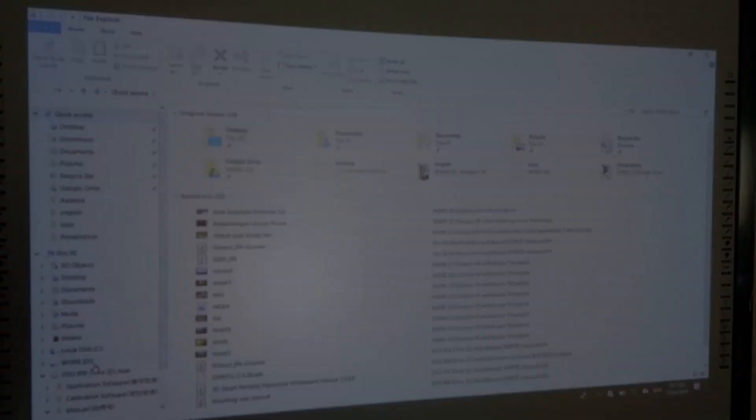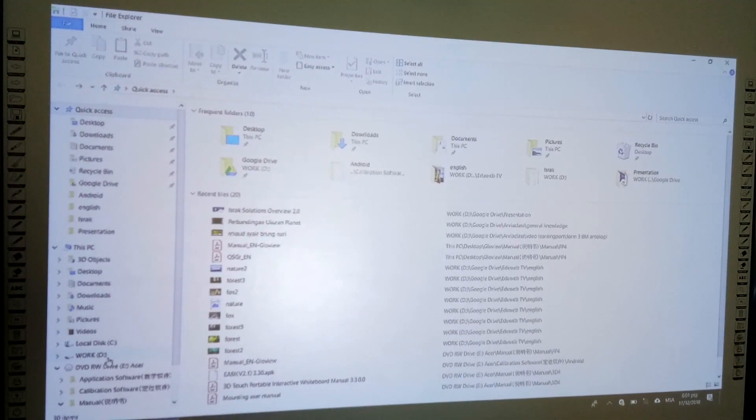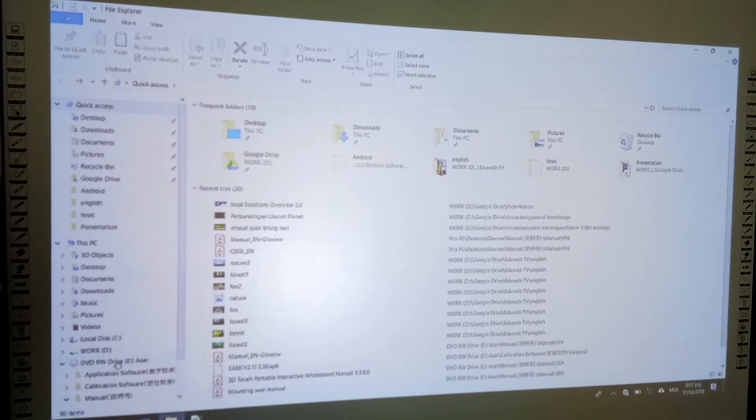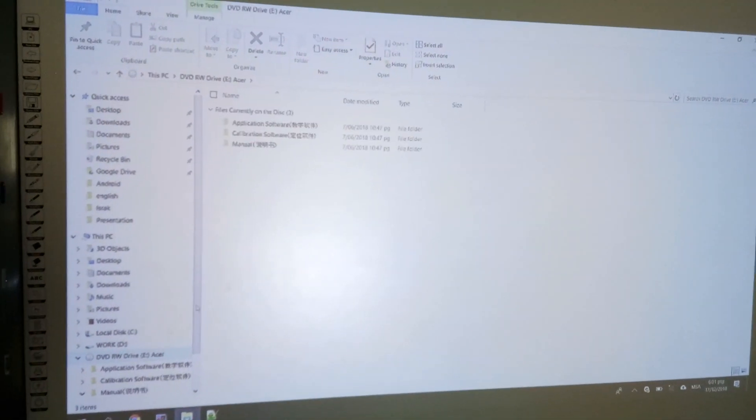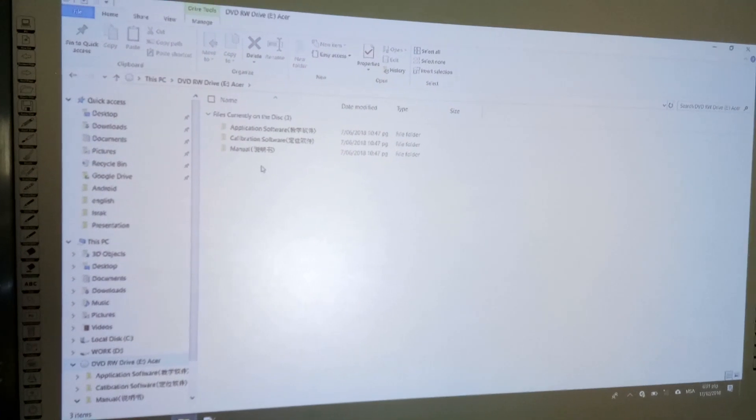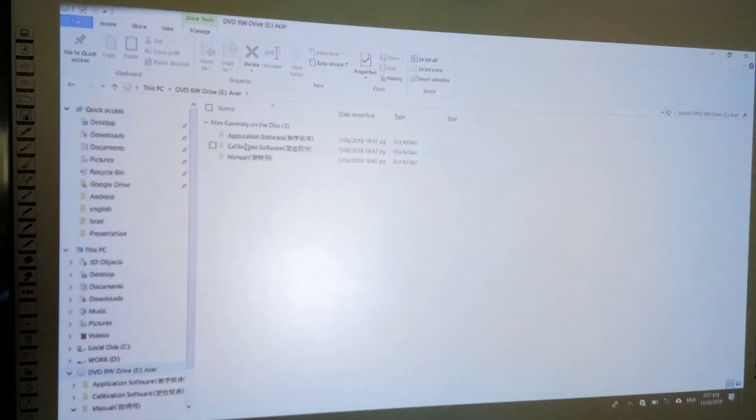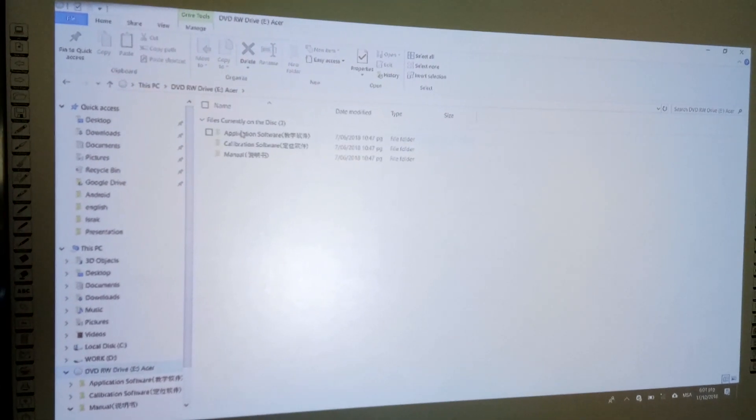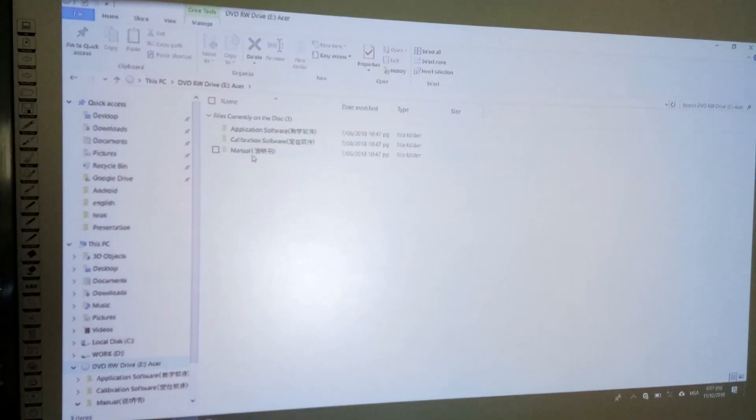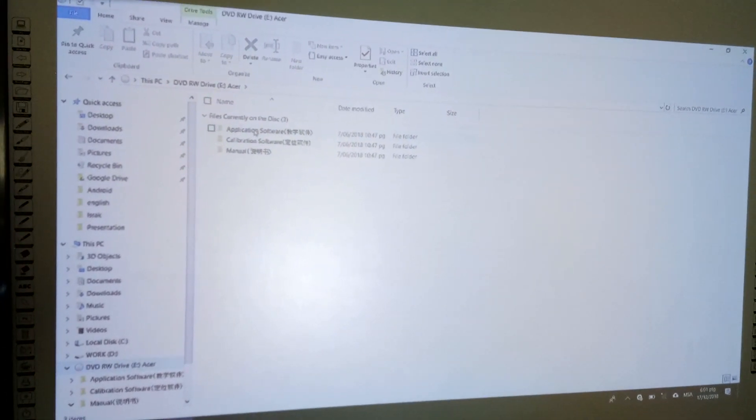Baiklah ini adalah step yang pertama. Masukkan CD. Kemudian dekat CD ni terdapat file untuk install software. Ini adalah tiga file yang ada dalam CD iaitu application software, calibration software dan manual. Untuk application software,